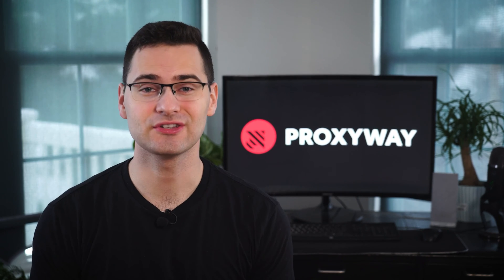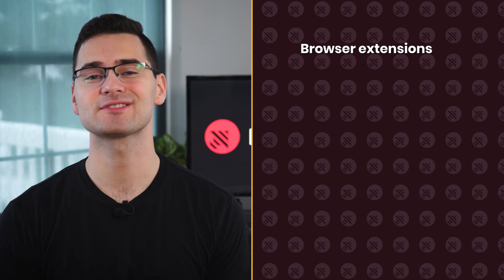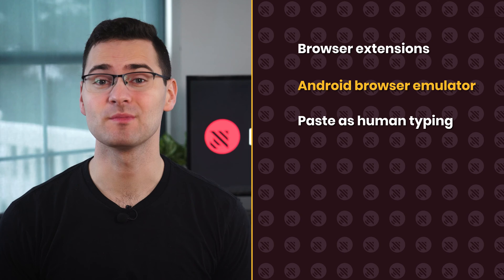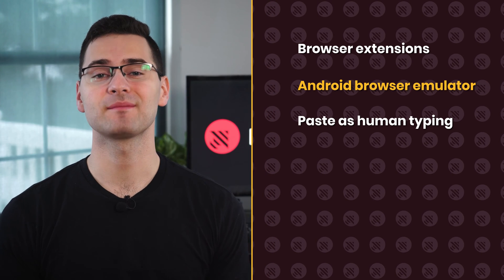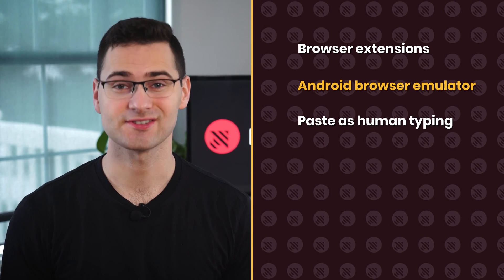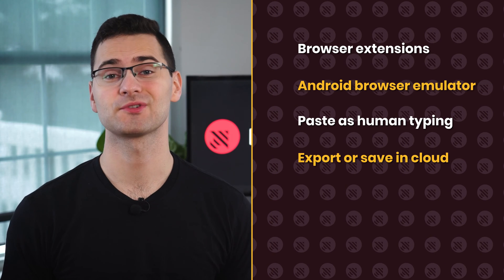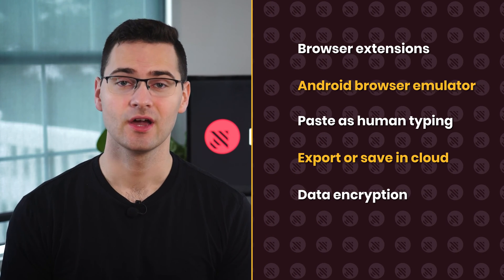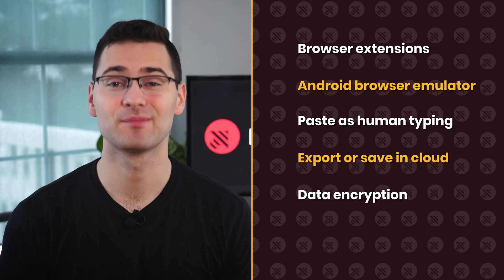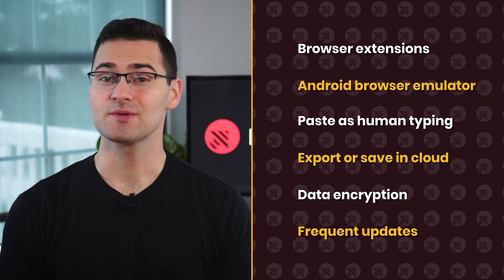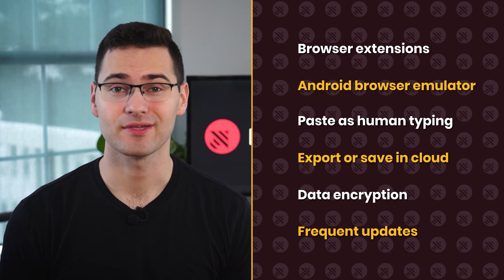There's plenty of other valuable features in the bundle — Firefox and Chrome browser extensions, emulating Android browser, and paste-as-human-typing, everything to make automation even more convenient. When your browser profiles are set up, save them locally or in cloud storage. Encrypt user data to keep your project safe. And the service is constantly improving — Multilogin is fond of updates, so expect at least a few minor ones per month.